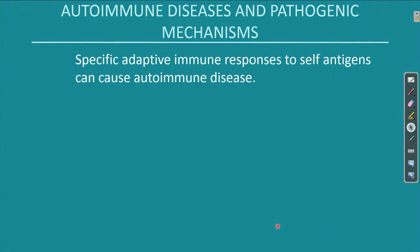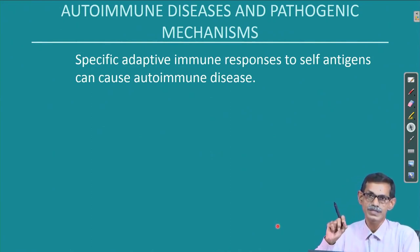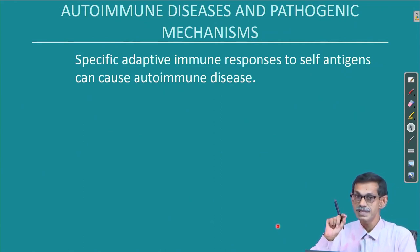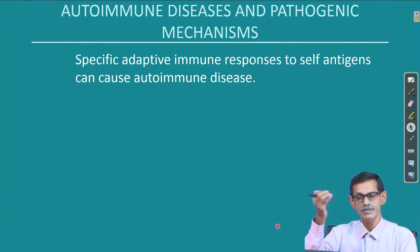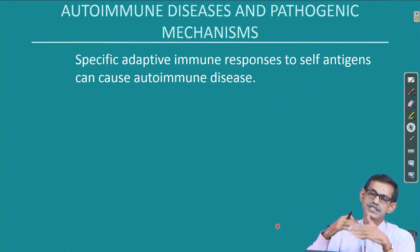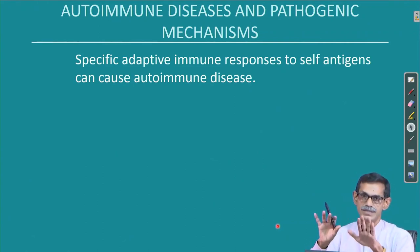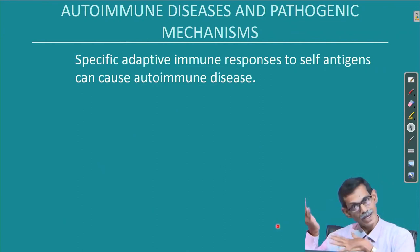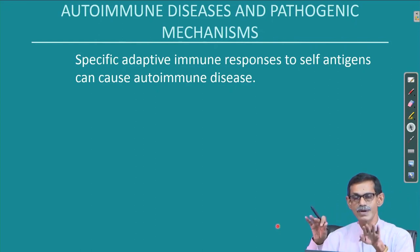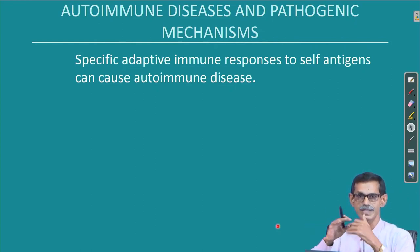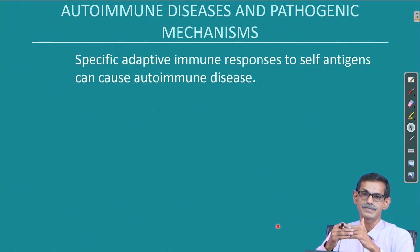Specific adaptive immune response to self antigen can cause autoimmune disease. In infection, if any infectious organism enters the body, the immune system works on it and removes it—whether toxin, virus, or bacteria—and eventually we are cured. That means no antigen will be there anymore, but in autoimmunity the problem is antigen is always there.